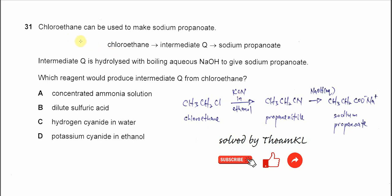Question 31. Chloroethane can be used to make sodium propanoate, and there are two steps to make this salt from chloroethane. The intermediate Q is hydrolyzed with boiling aqueous sodium hydroxide to give the sodium propanoate. Which reagent would produce intermediate Q from this chloroethane?